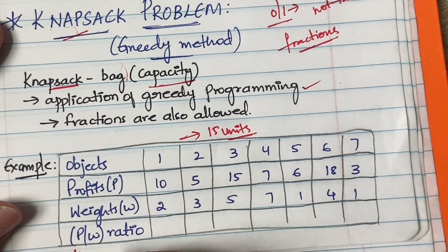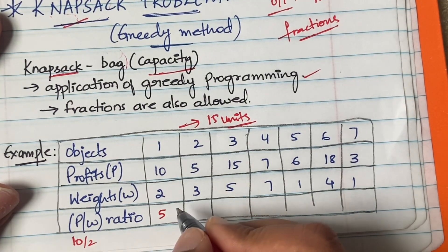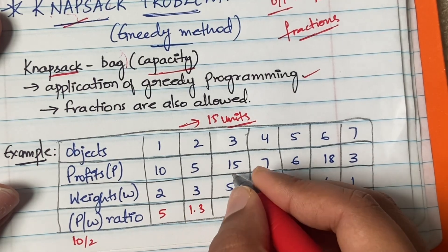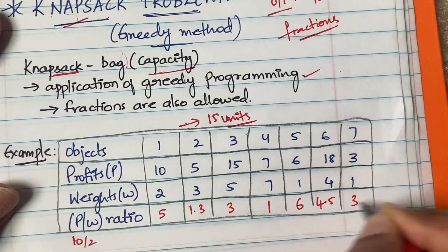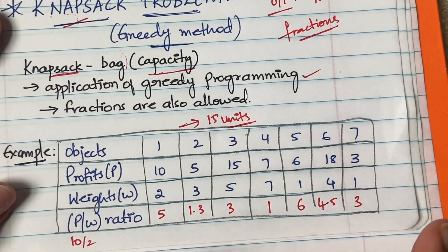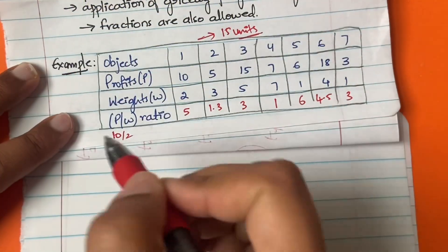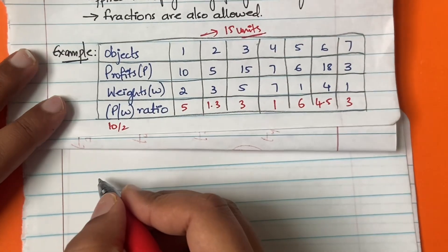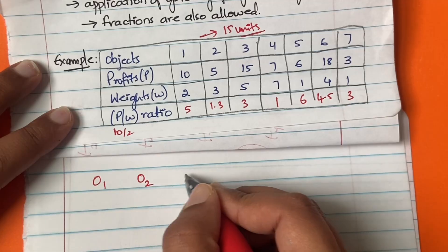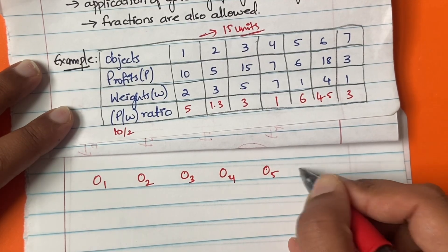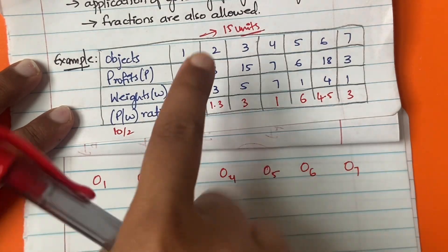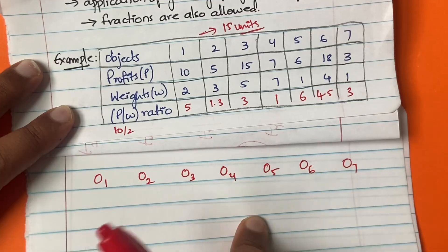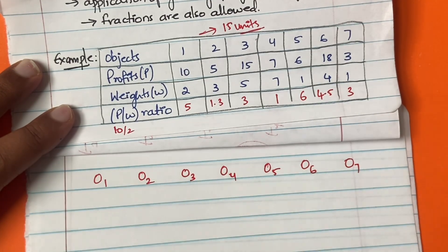Calculating the profit-by-weight ratios: object 1 has profit 10, weight 2, so ratio = 5. Object 2: 5 divided by 3 = 1.3. Object 3: 15 divided by 5 = 3. Object 4: 7 divided by 7 = 1. Object 5: 6 divided by 1 = 6. Object 6: 18 divided by 4 = 4.5. Object 7: 3 divided by 1 = 3. Now we deal with these ratios. In the previous problem we started with the highest profit, but now we start with the highest profit-by-weight ratio.